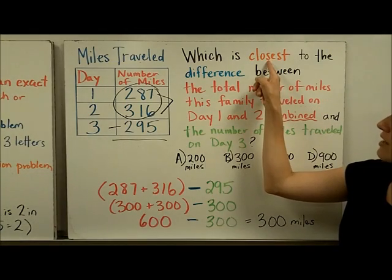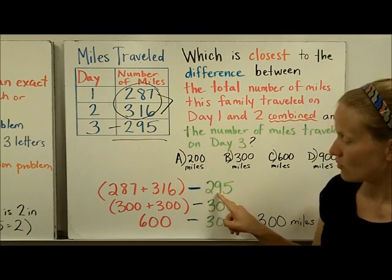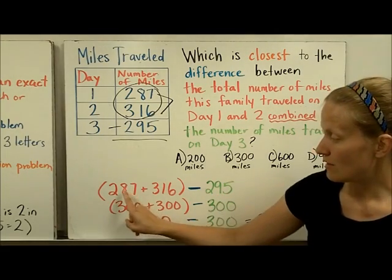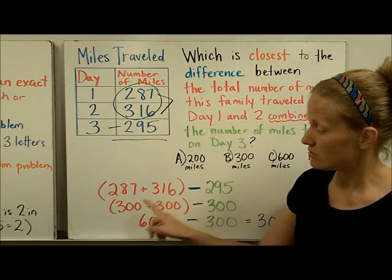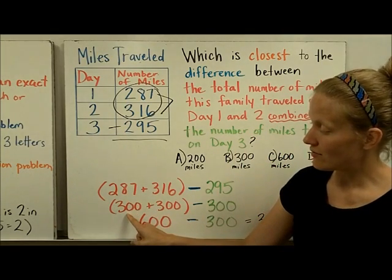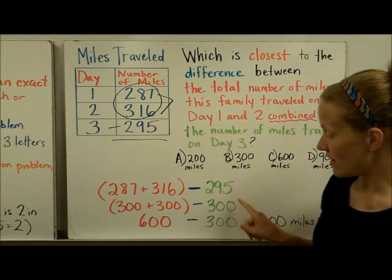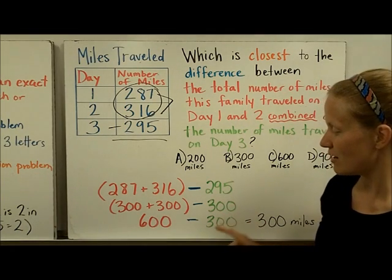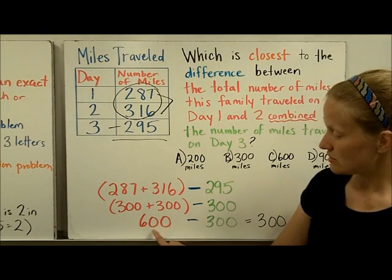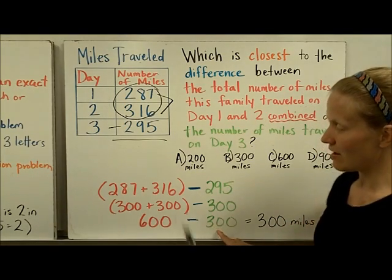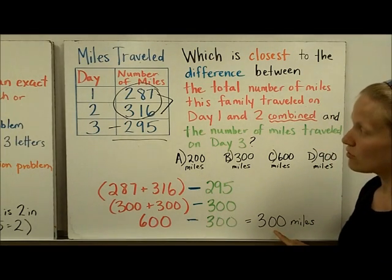Since we need an estimate, let's use rounding — it's the most accurate when no specific method is required. 287 rounds to 300, 316 rounds to 300, and 295 rounds to 300. Interesting — they all round to about 300. Combined, day one and day two is 600 miles. So 600 miles minus the estimated day three amount of 300 gives us an estimated difference of 300 miles.